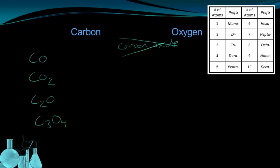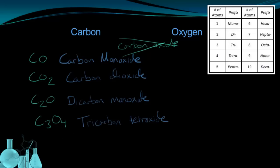So using this table, let's see how we can name these compounds. The first compound, CO, is carbon monoxide. The second compound, CO2, is carbon dioxide. The third compound that I made up here, C2O, would be called dicarbon monoxide. And the last compound, C3O4, I would name that tricarbon tetroxide.